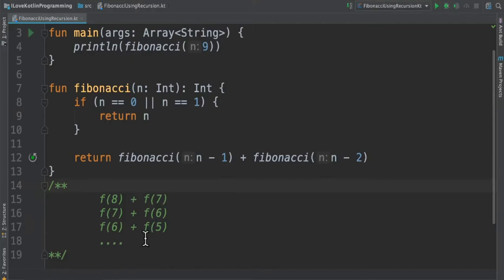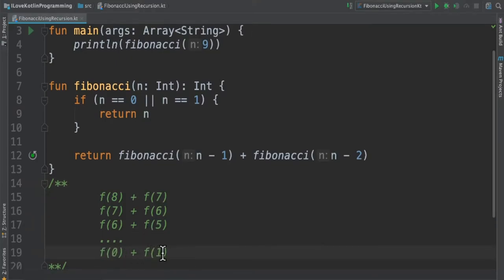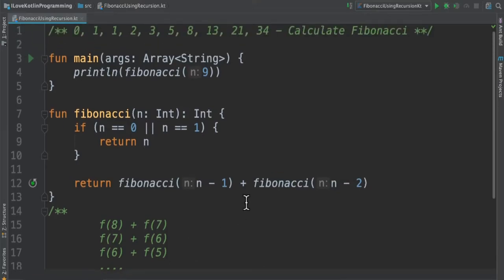It's something similar to this, until we reach f of 0, f of 1. It will be in the JVM stack. Once it returns, then we'll be calculating the sum and will be returning 34.